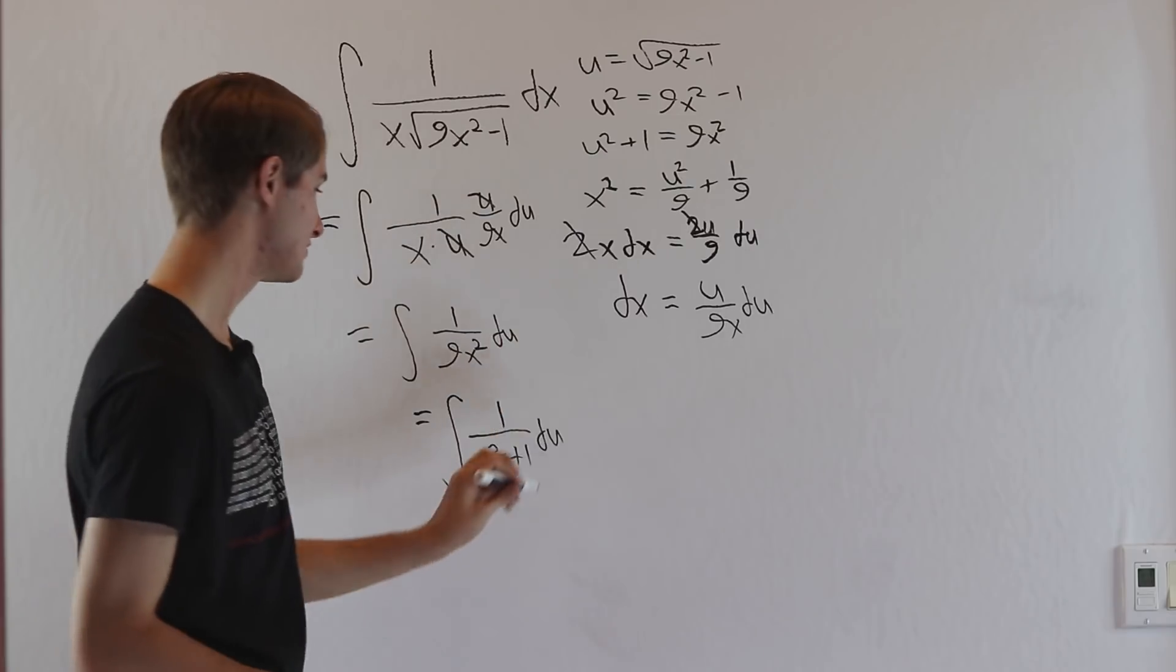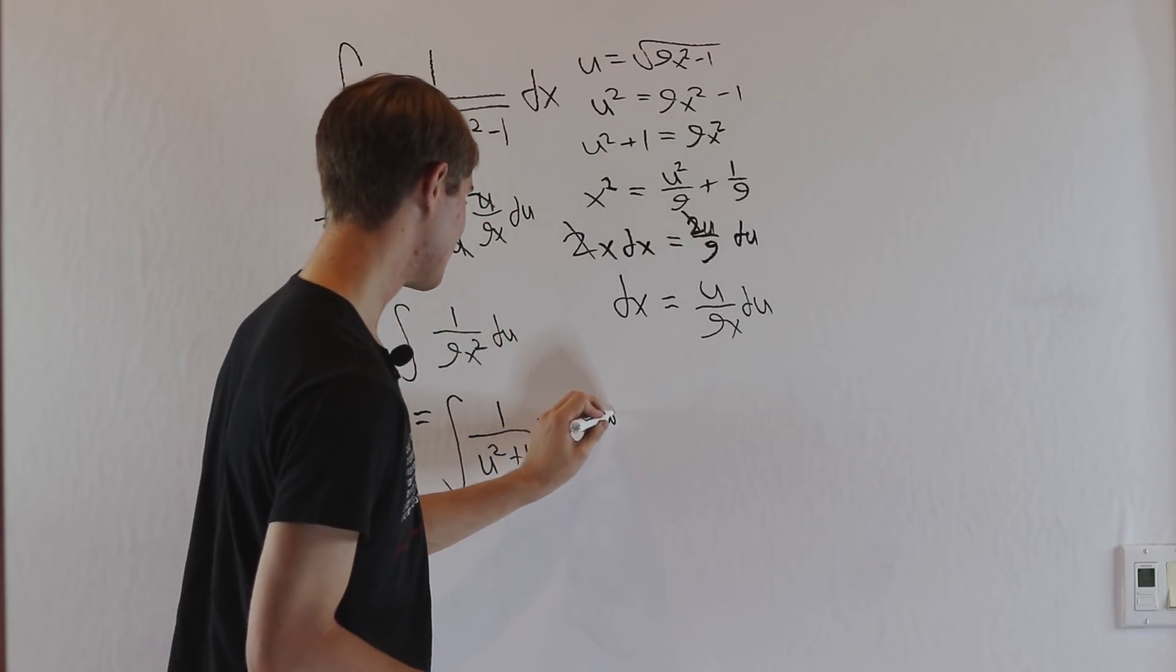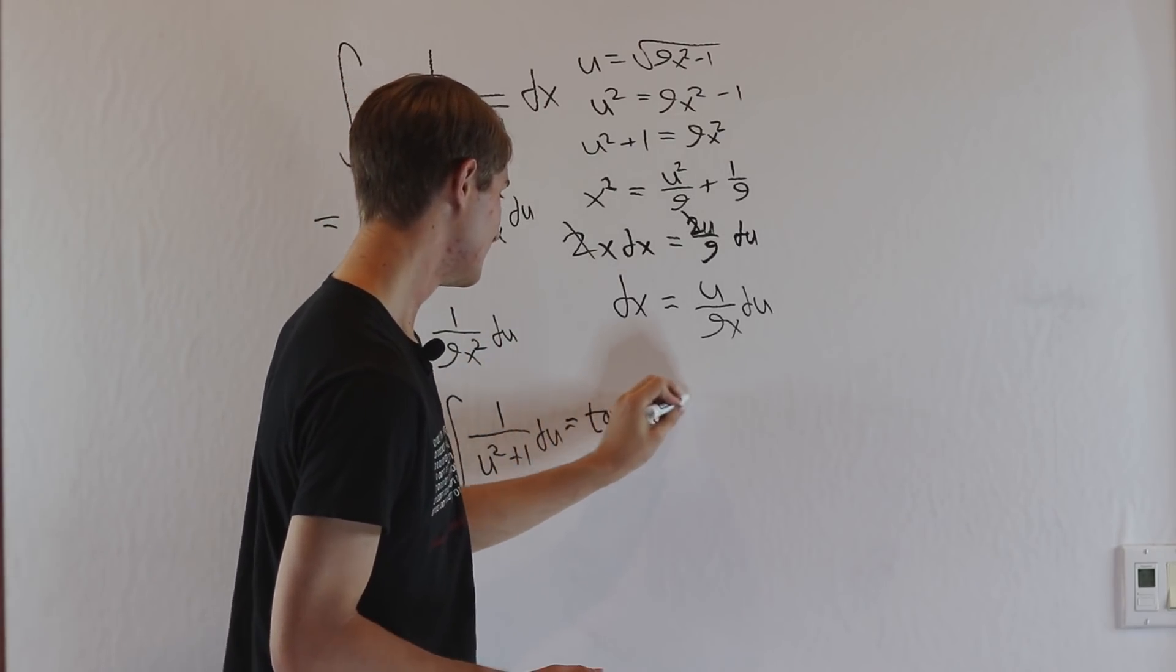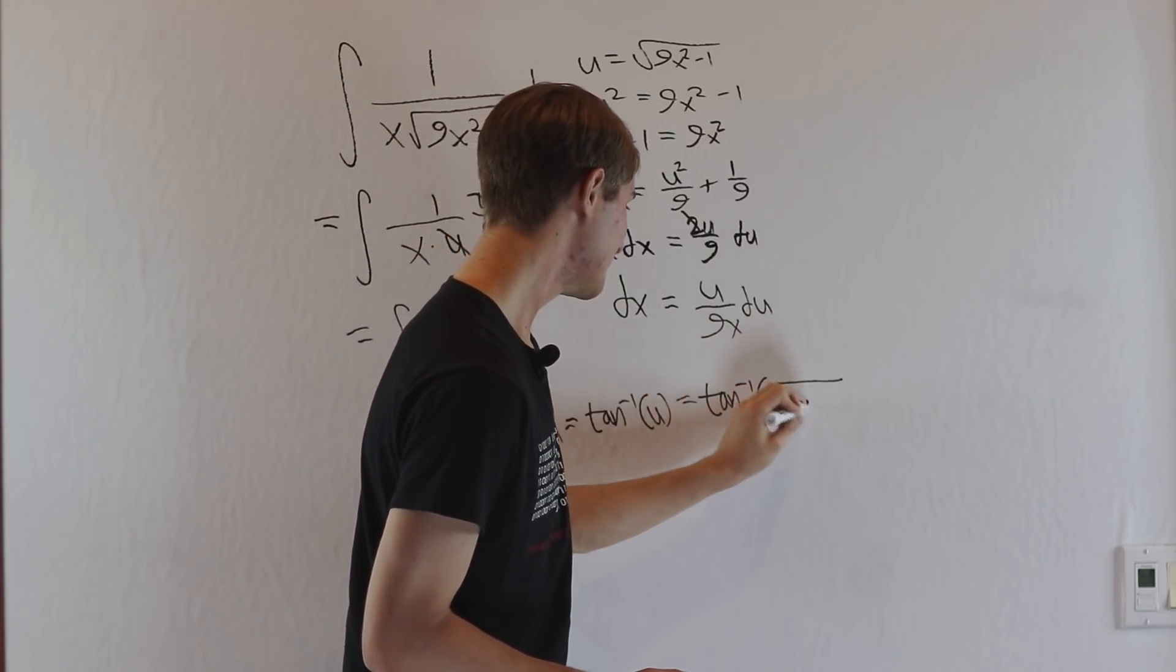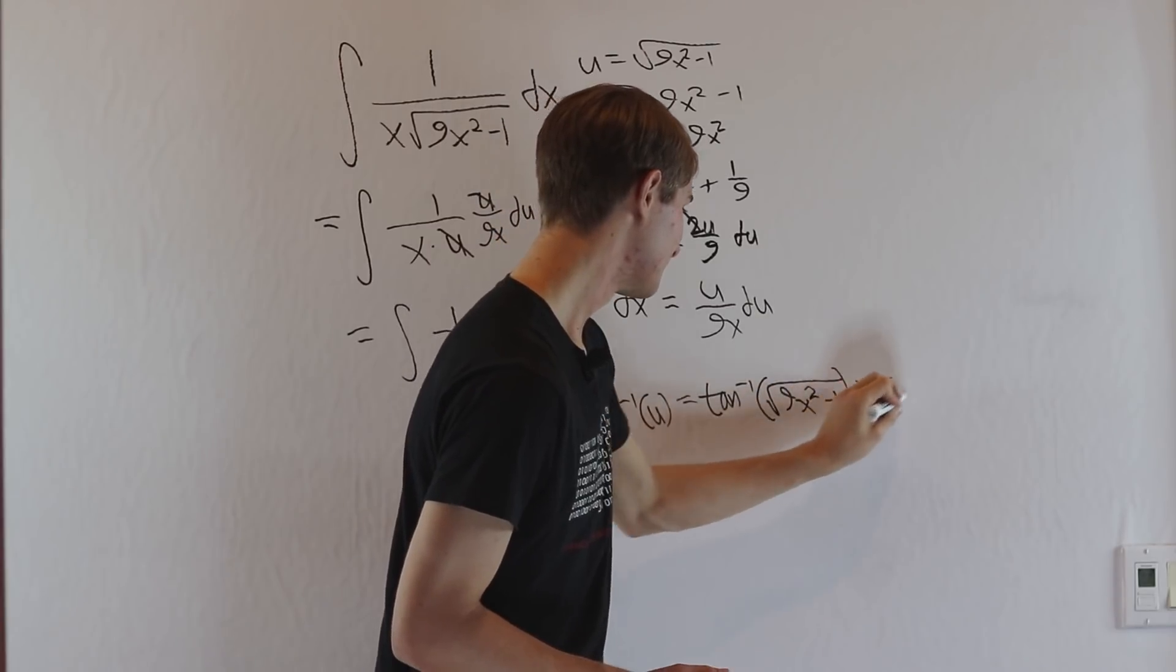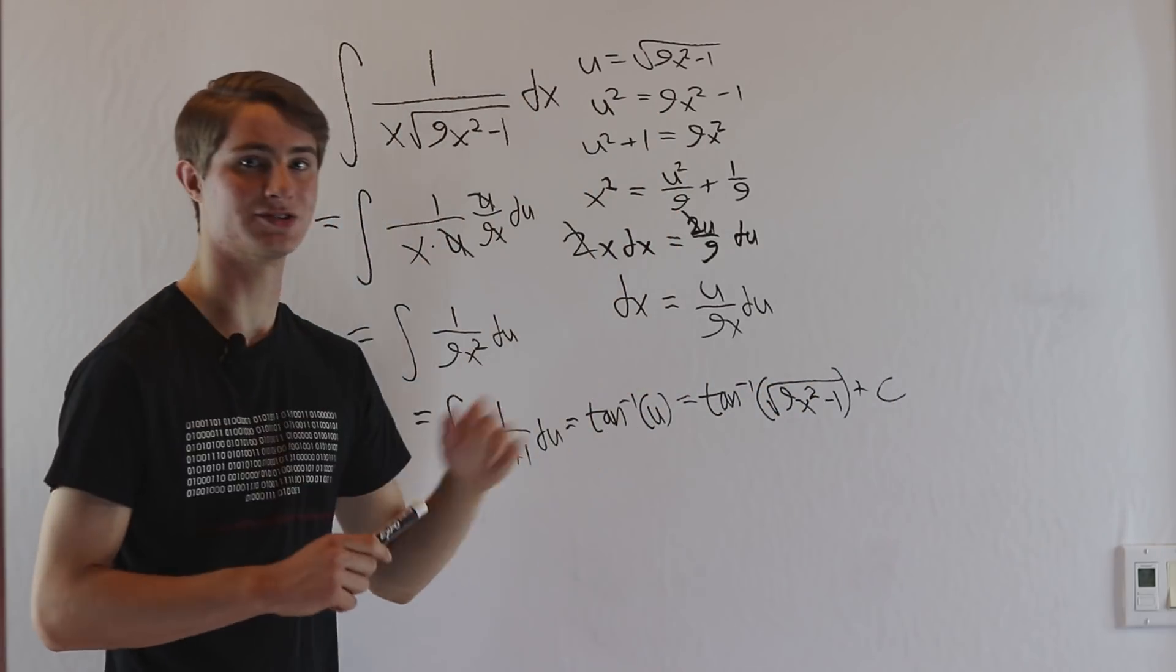And of course we know how to evaluate this. This just gives us the inverse tangent of u, and then we substitute back in our u, we get the inverse tangent of the square root of 9x squared minus 1 plus c. And that is our final answer.